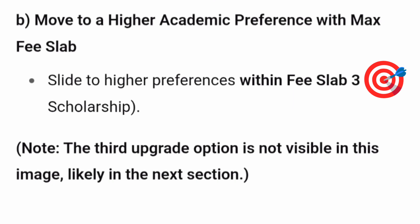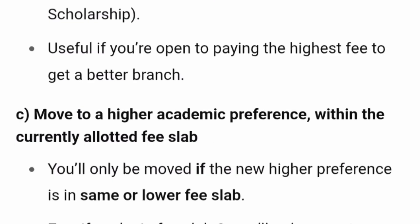Type B: Move to a higher academic preference with a maximum fee slab cap. The student says they are ready to pay up to, for example, fee slab 3, and that is fine — they are open to paying a higher fee to get a better branch, but only up to their specified maximum slab.